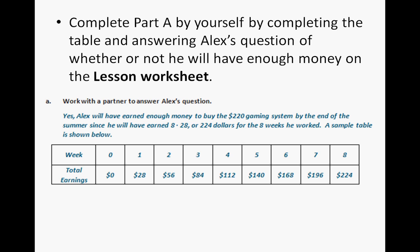You should have answered yes. Remember to state the question as part of your answer — it's asking will he have enough money, and you want to make sure to say yes. Alex will have earned enough money to buy the $220 gaming system by the end of the summer, since he will have earned 8 times 28, or $224, for the eight weeks he worked. You can also complete a sample table showing what happens at the end of eight weeks.